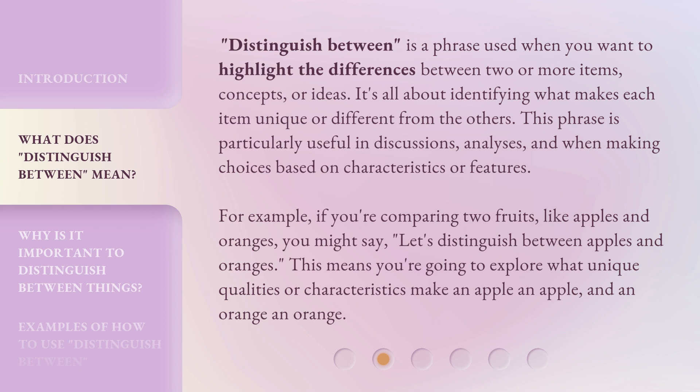For example, if you're comparing two fruits, like apples and oranges, you might say: 'Let's distinguish between apples and oranges.' This means you're going to explore what unique qualities or characteristics make an apple an apple and an orange an orange.